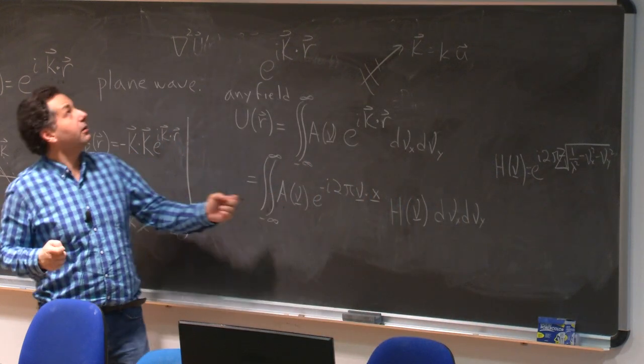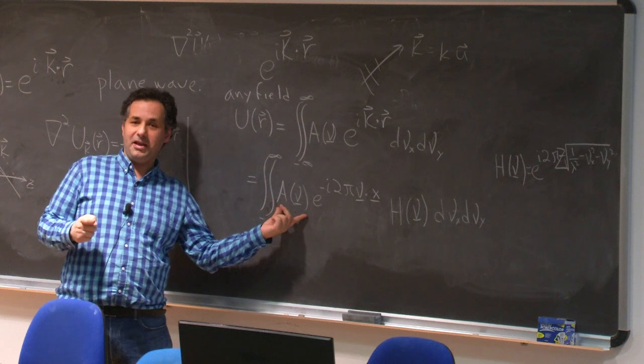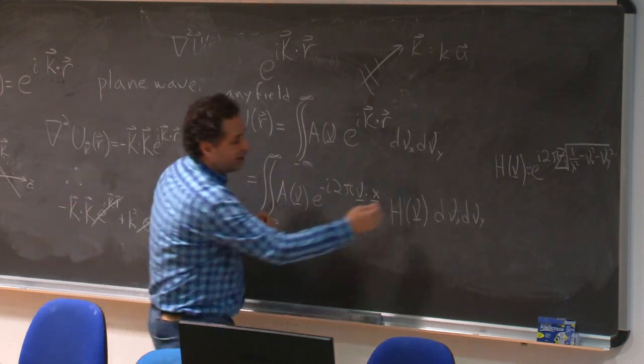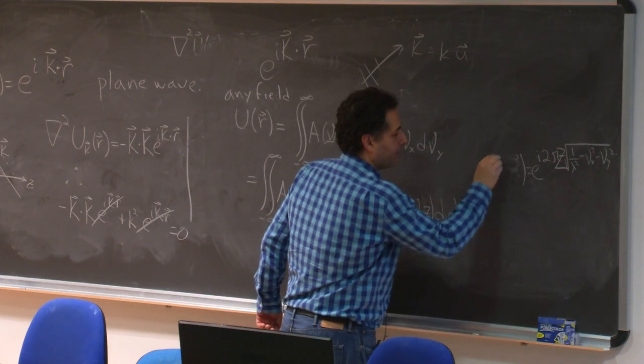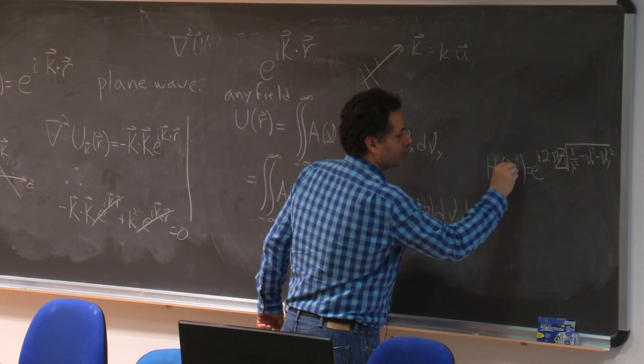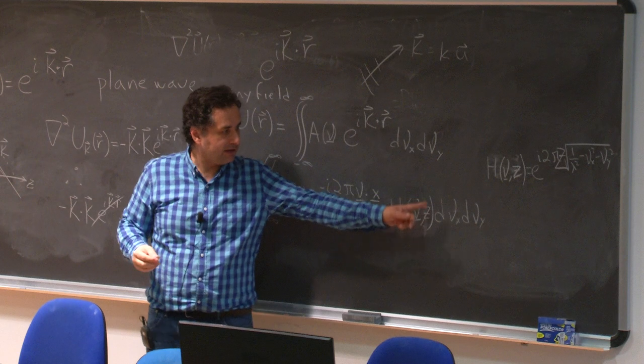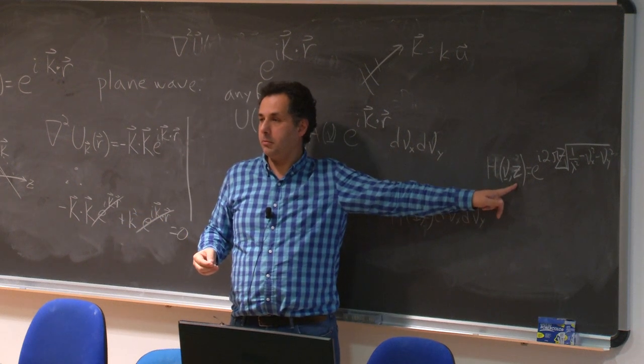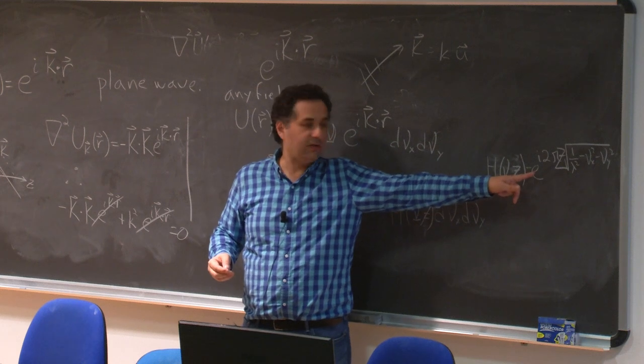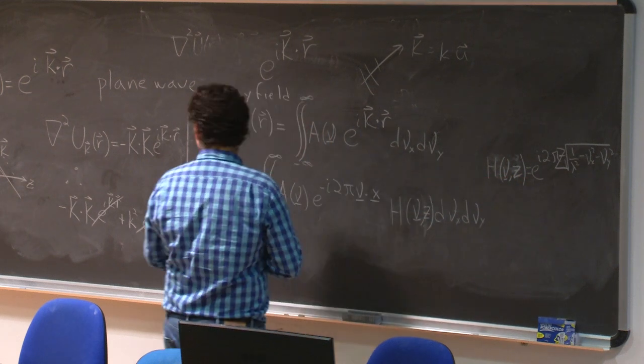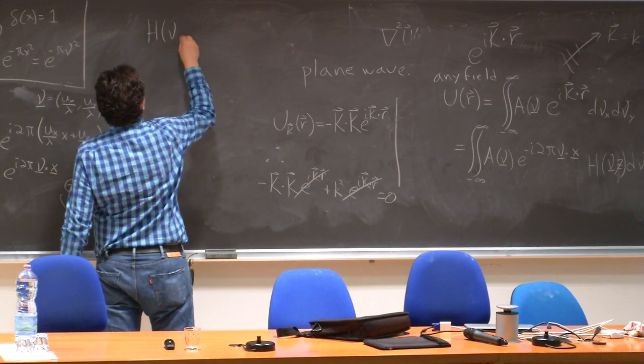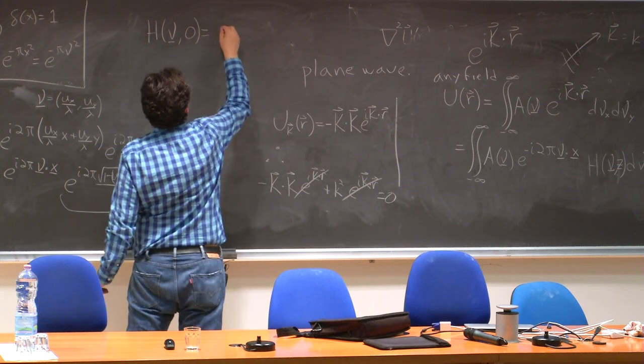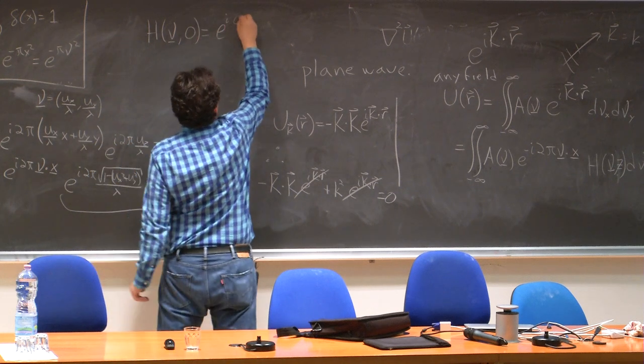Now, how do I find this a? So this h depends on nu and depends on z. What happens if I let z equal 0? What is the exponential equal to? One. So notice that h of nu at z equals 0 is equal to e to the i times 0, equal to 1.